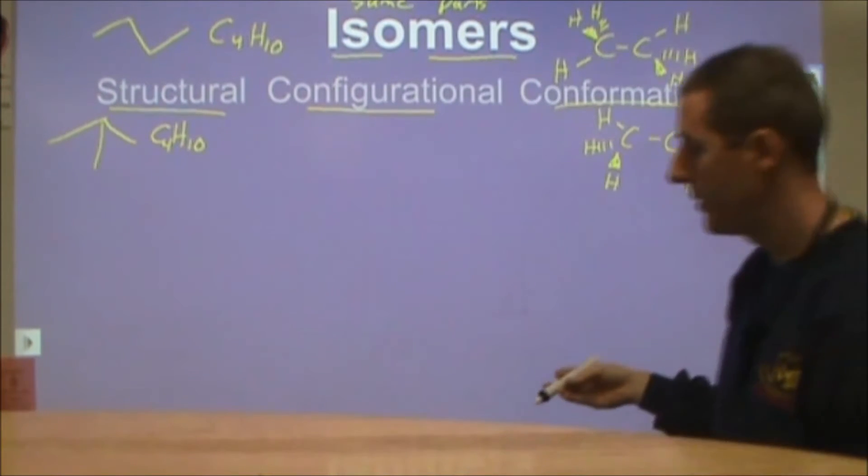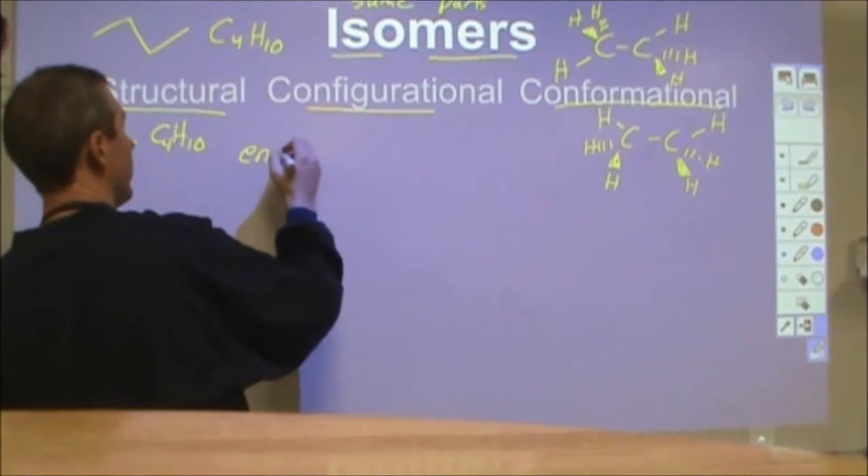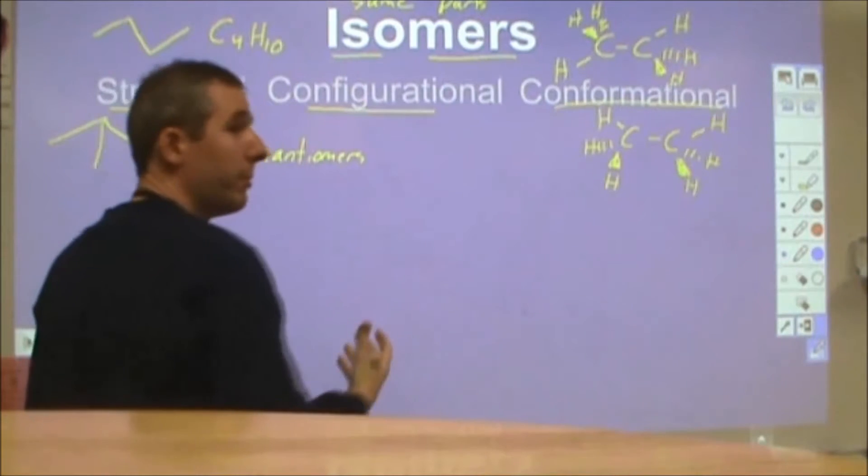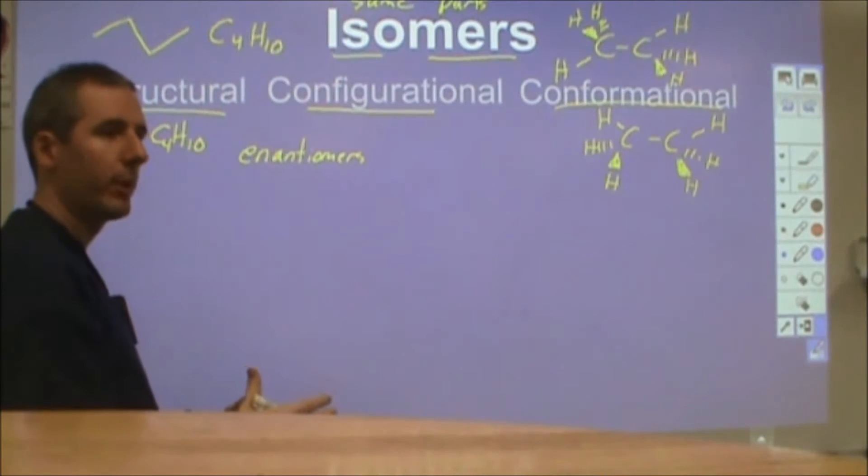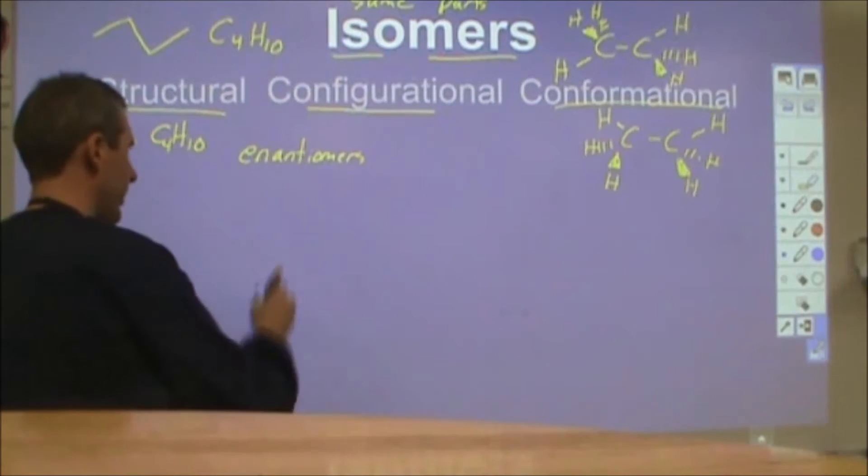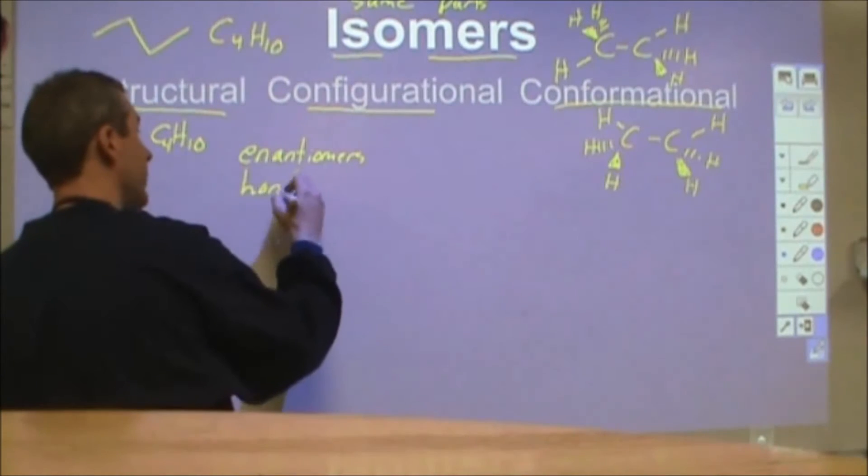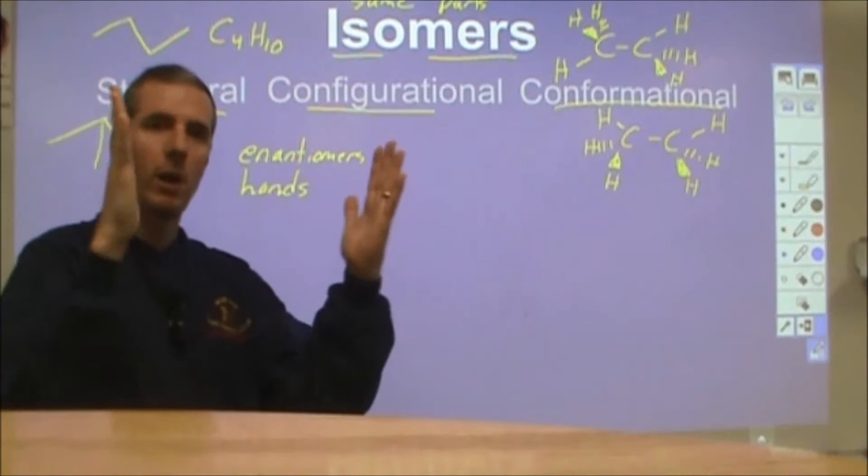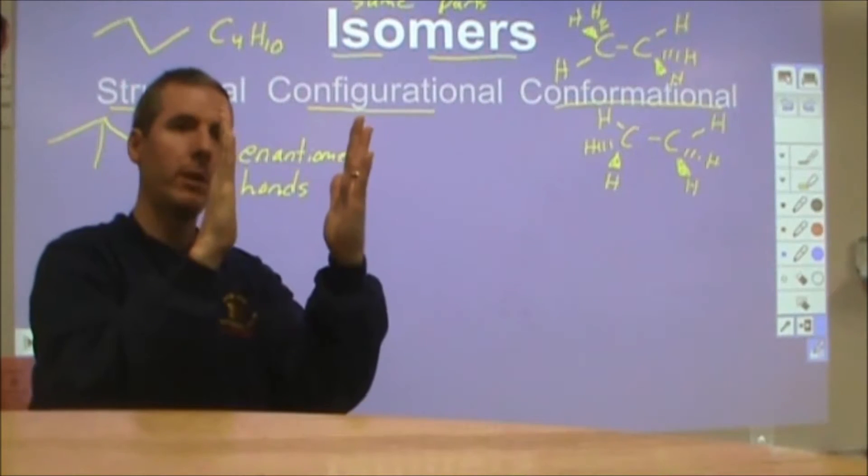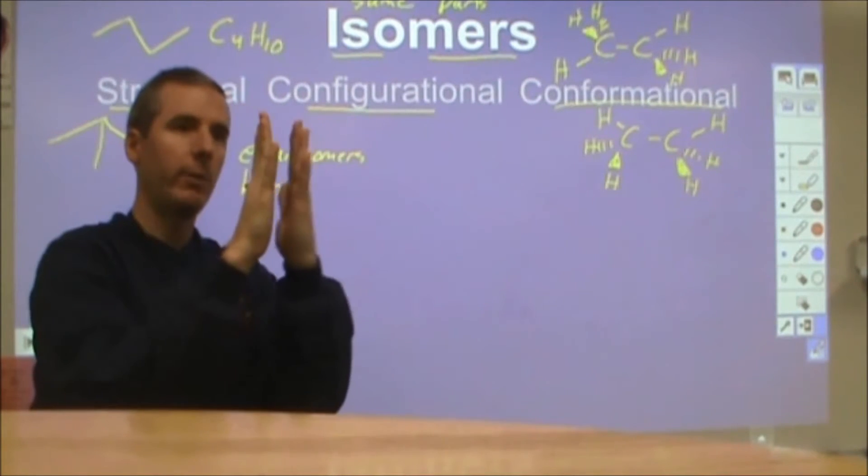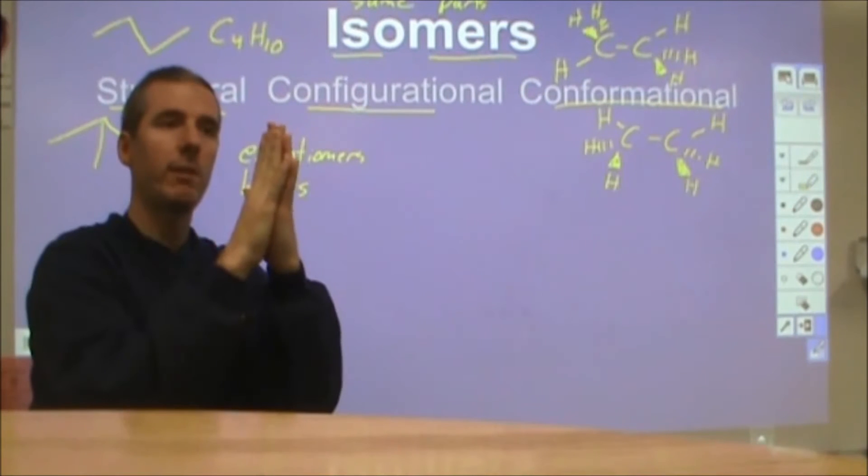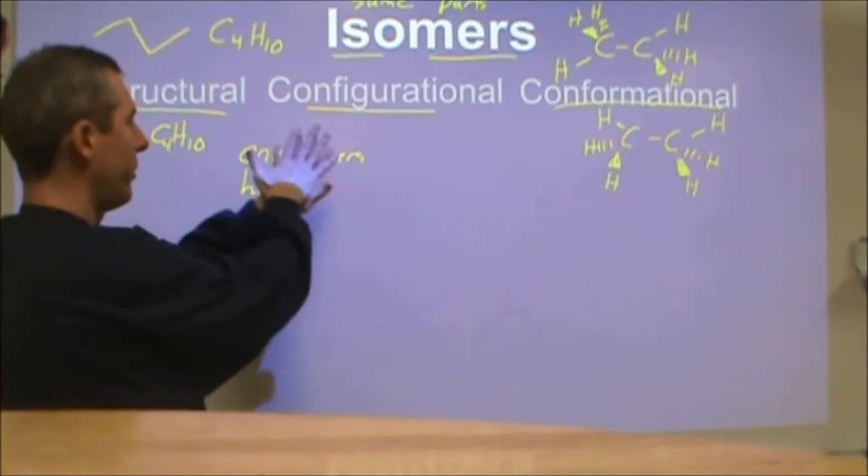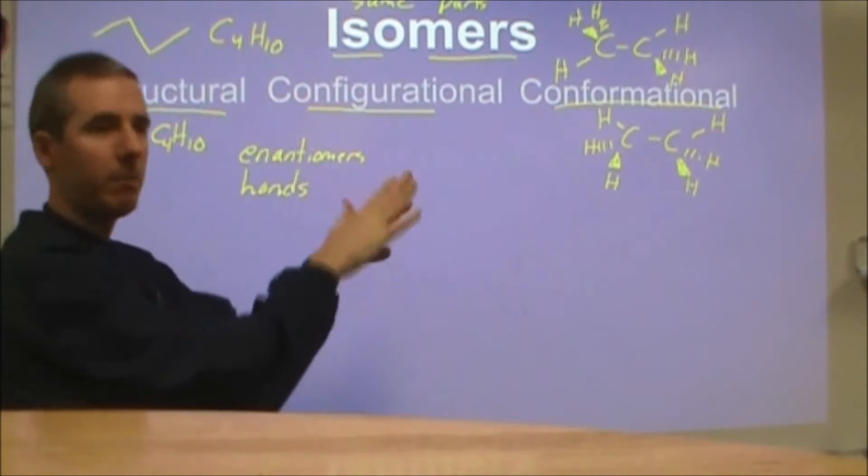There are two kinds of configurational isomers. There are enantiomers which are chemicals that are the same but they're mirror images of each other that can't be put on top of each other. A good example of enantiomers are your hands. Ignoring rings and freckles, your hands are mirror images of each other. If we had a mirror plane here they would reflect to see the exact same fingers on both sides, but I can't put my hand on top of one another and have them be the same.